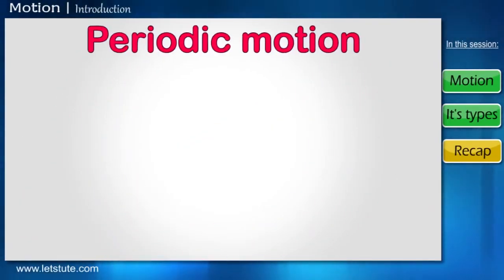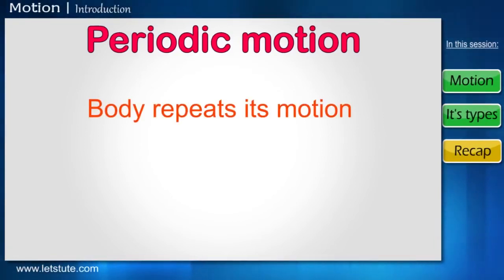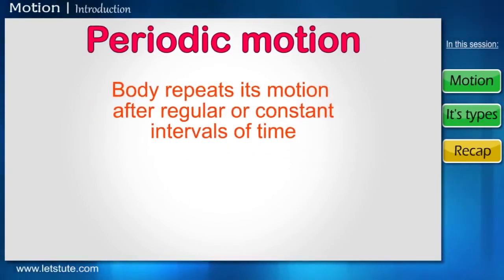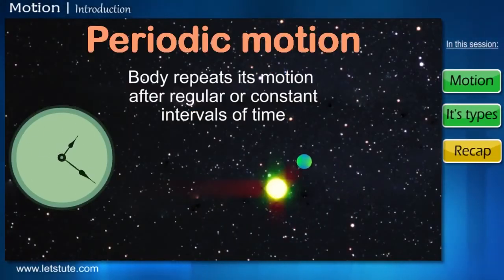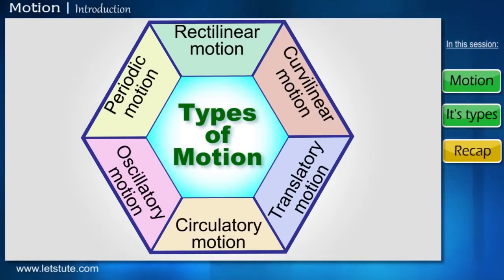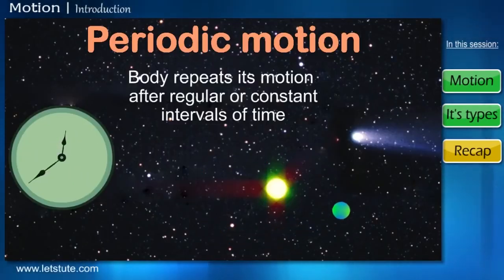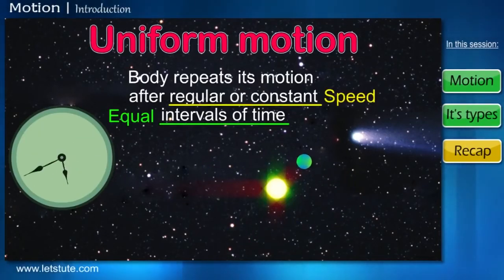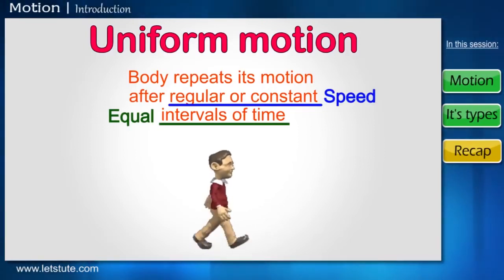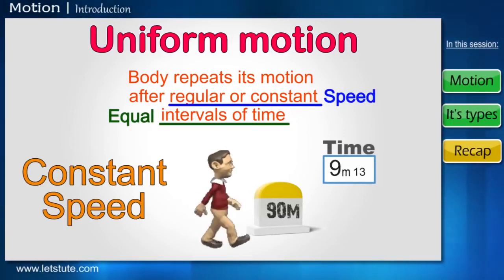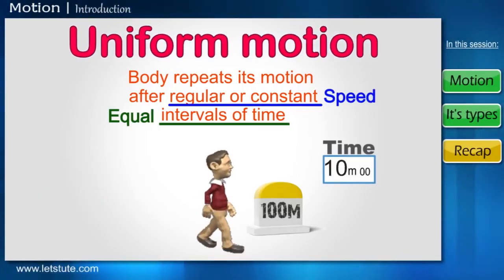Another type of motion is periodic motion. As the name suggests, when a body repeats its motion after regular or constant intervals of time, it is known as periodic motion. Examples include the hands of the clock, earth revolving around the sun, and the Halley's comet, which is seen only once in 76 years. Periodic motion can also be known as uniform motion, because the movement is done in equal interval of time with constant speed. For example, if a man covers a constant length of 10 meters for every minute, then at the end of 10 minutes, he would have covered a total distance of 100 meters. This is known as uniform motion.